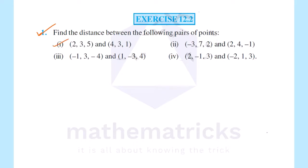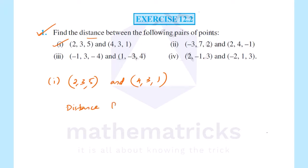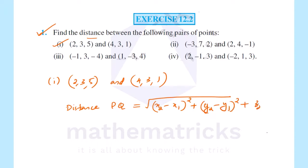First one: points (2, 3, 5) and (4, 3, 1). From last session, the distance formula PQ is equal to square root of (x2 minus x1) all square plus (y2 minus y1) all square plus (z2 minus z1) all square. This is the distance formula.